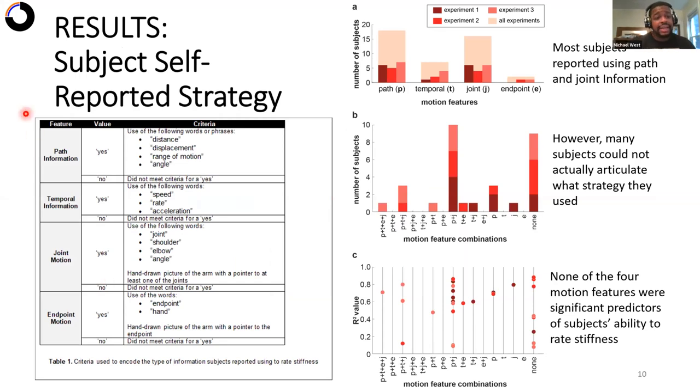And remember the second thing we did was after subjects completed the study and saw the simulations, we asked them to write down the strategy they used. This is an open-ended question. Subjects could have said anything, some subjects even drew pictures. What we wanted to do was tease out the information. We're specifically looking at whether subjects use path information, temporal information, joint motion, or endpoint motion.